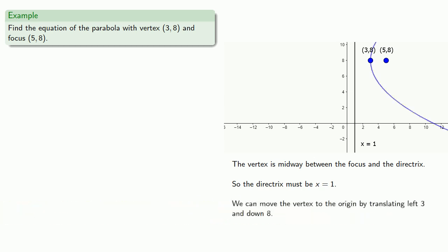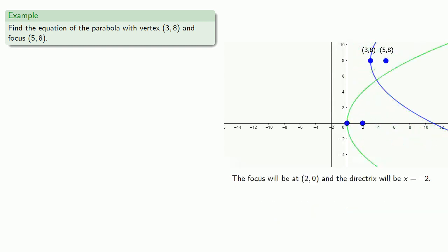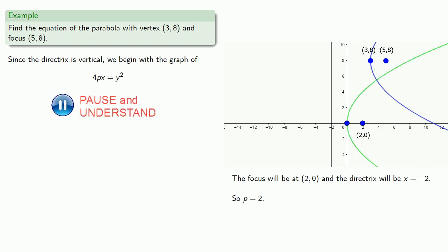And again we can move the vertex to the origin by translating left 3 and down 8. And if we do that, the focus will be at (2, 0). And the directrix will be at x equals negative 2. So p is equal to 2. And since the directrix is vertical, we begin with the graph of 4px equals y squared. We found p equal to 2.